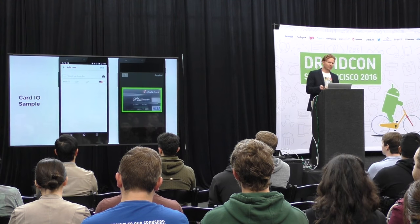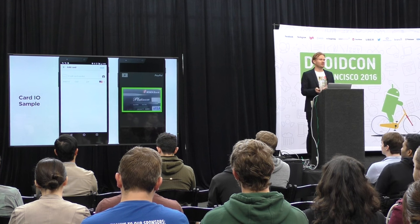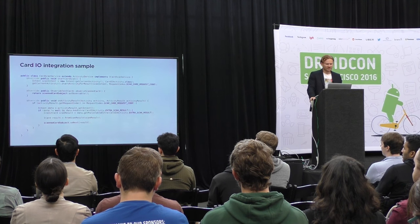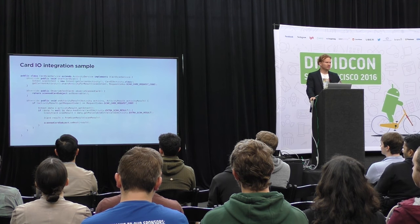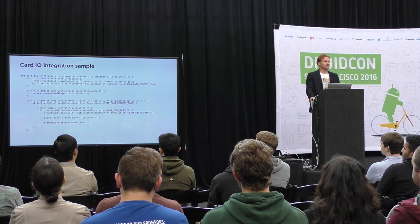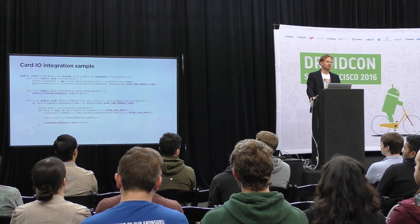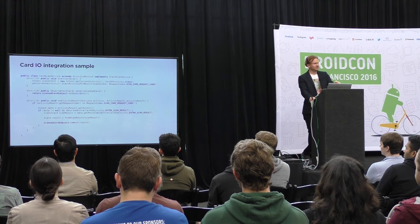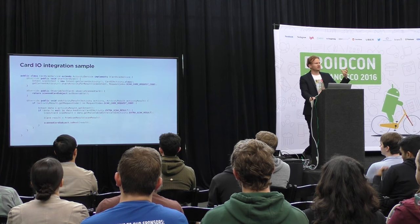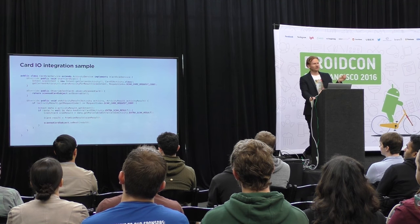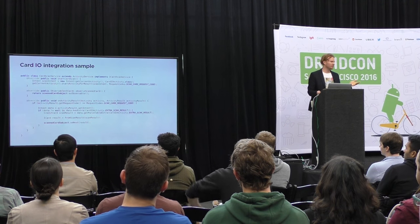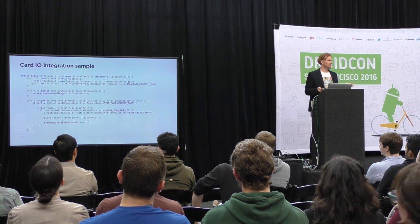For example, to integrate card.io for scanning a card, all you need to do is hook to activity result, parse the response inside activity result, and put it into a behavior subject that can be exposed as an observable method for users of this service. The beauty here is that the interface of the card scanning service has no dependencies on Android code, so you can always fake it out easily without using Robolectric or any other code that depends on Android.